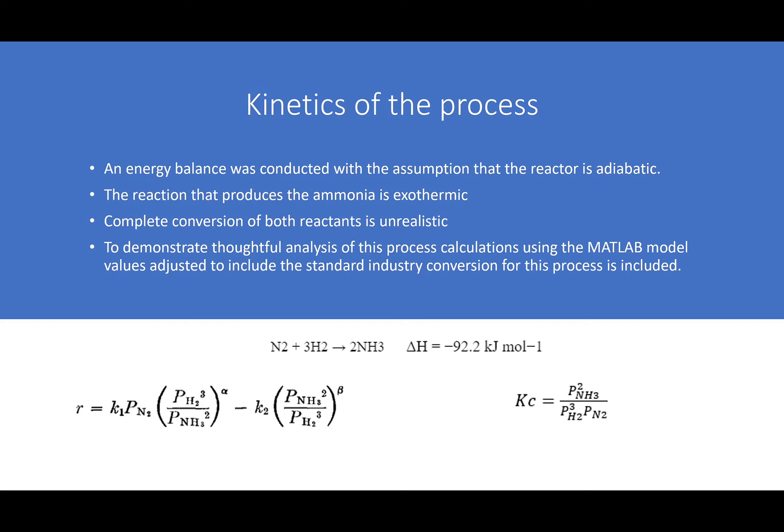In the 1940s, Temkin and Peisev offered a satisfactory kinetic approach to the synthesis and decomposition of ammonia over iron catalysts. The rate law is shown below as well as the equilibrium constant, which is represented in partial pressure of the product over the partial pressure of the reactants to their stoichiometric coefficients. This reaction is exothermic and has an enthalpy of negative 92.2 kilojoules per mole.